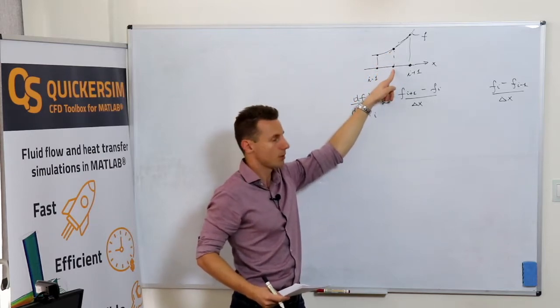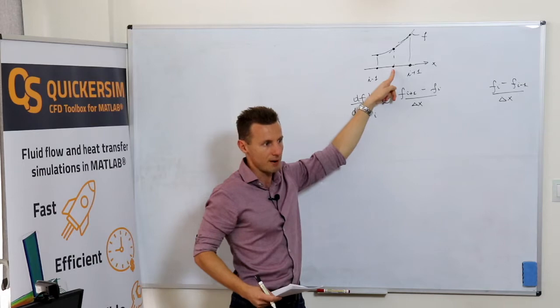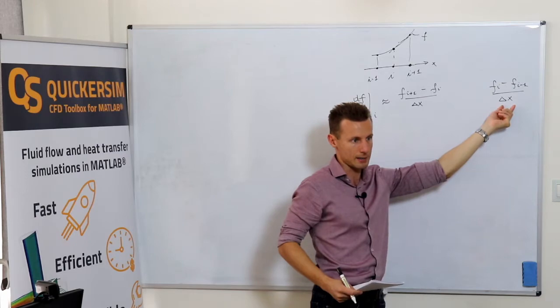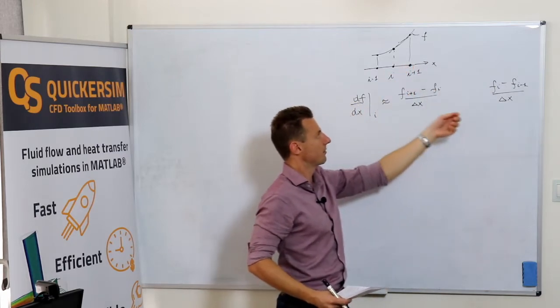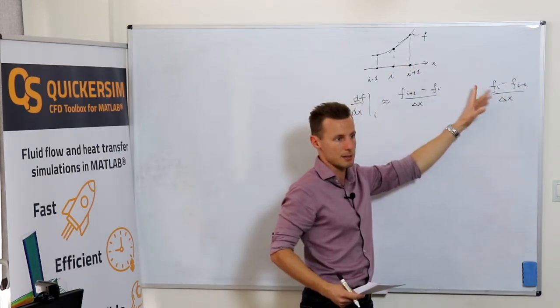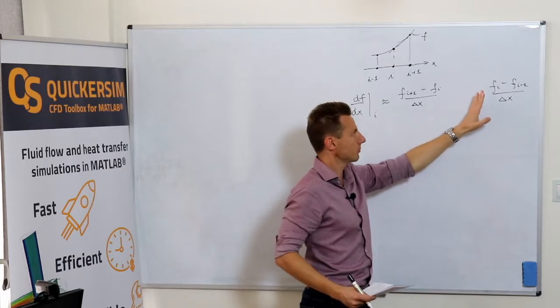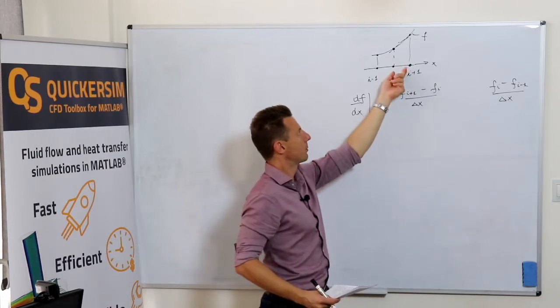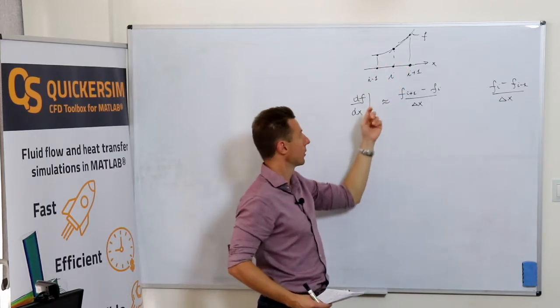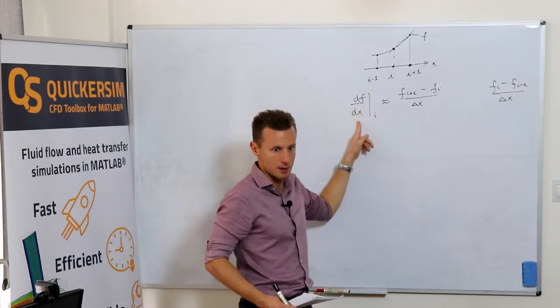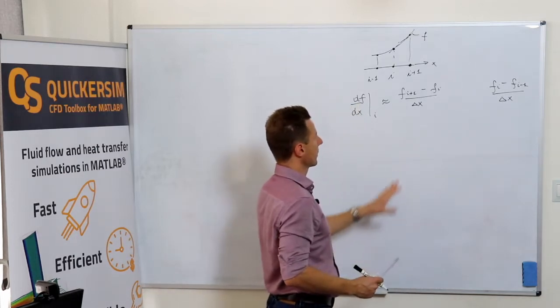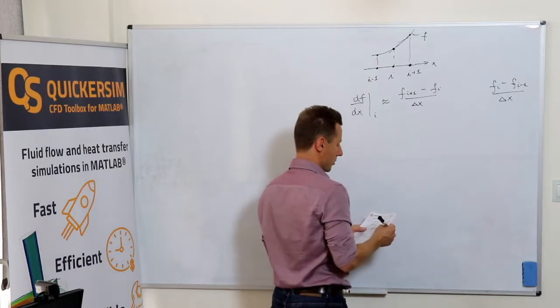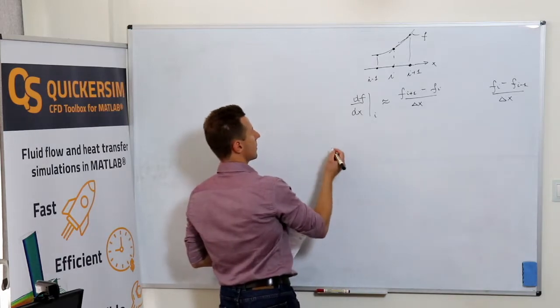Why is it a valid approximation? Because if you keep decreasing delta X, then the value calculated by this formula will approach the correct value of the first derivative calculated analytically.